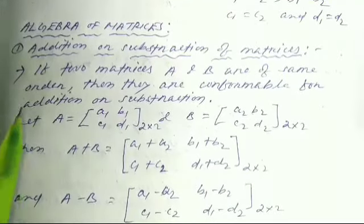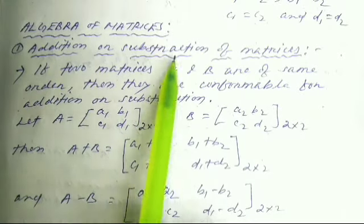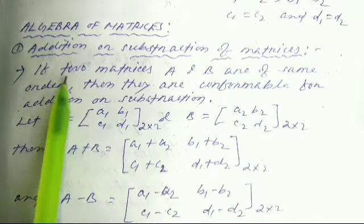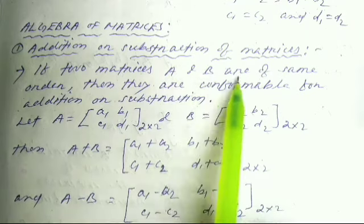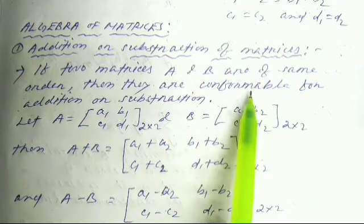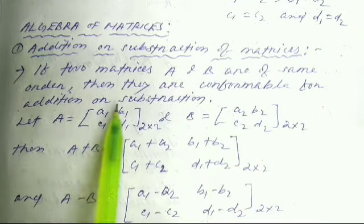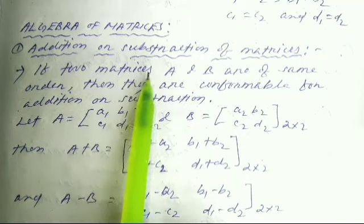Next, we look at the order of matrices and the addition or subtraction of matrices. If two matrices A and B are of the same order, then they are conformable for addition and subtraction.